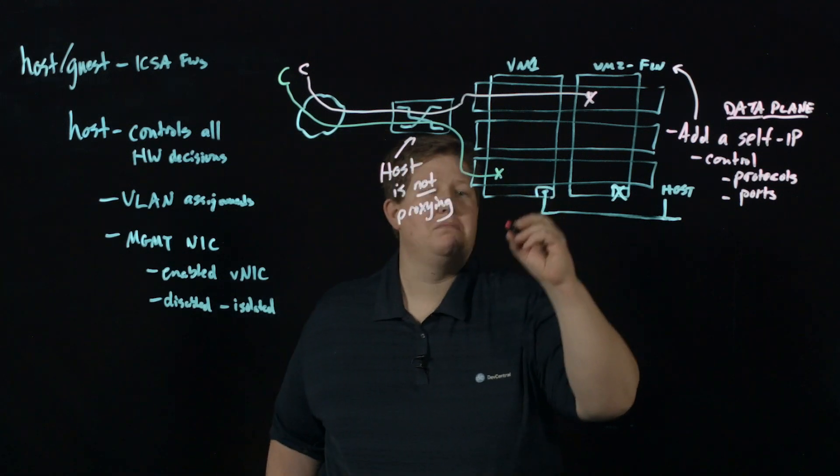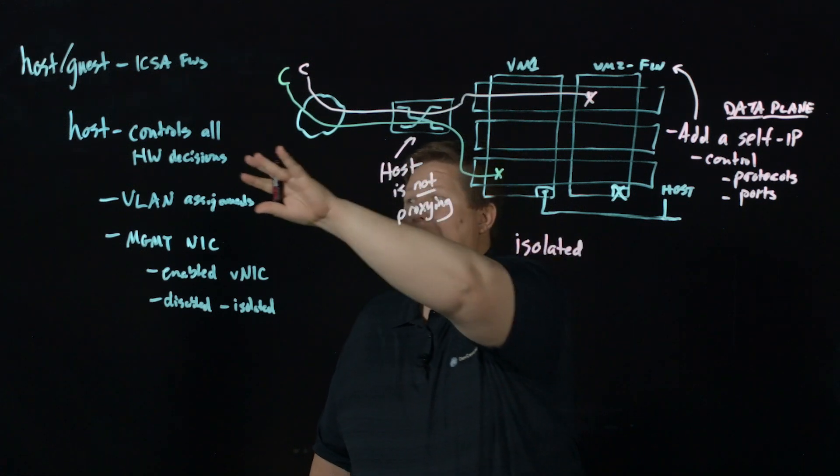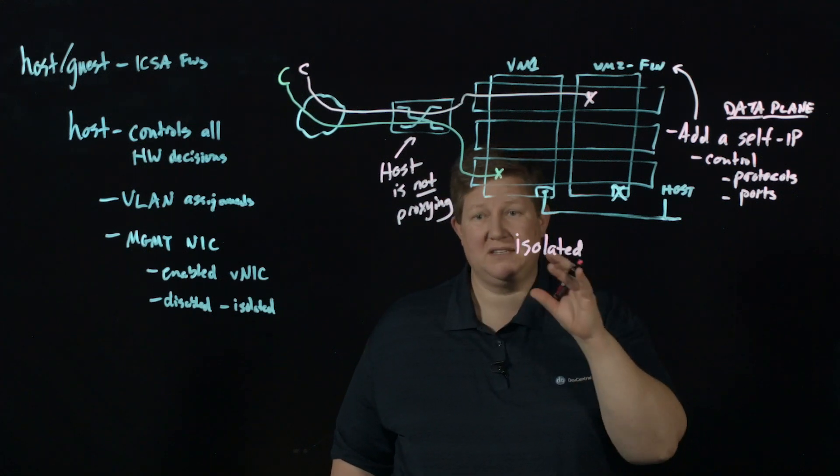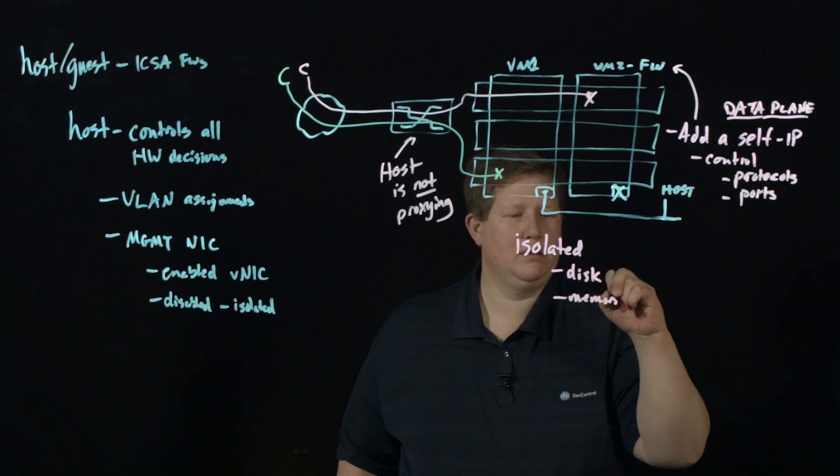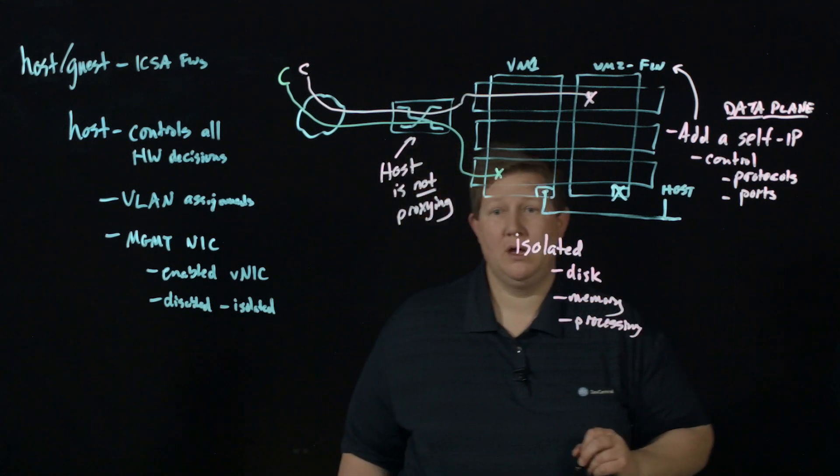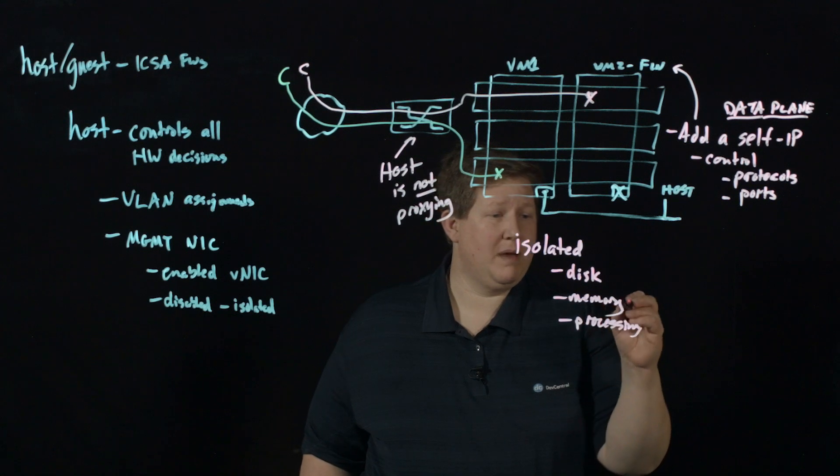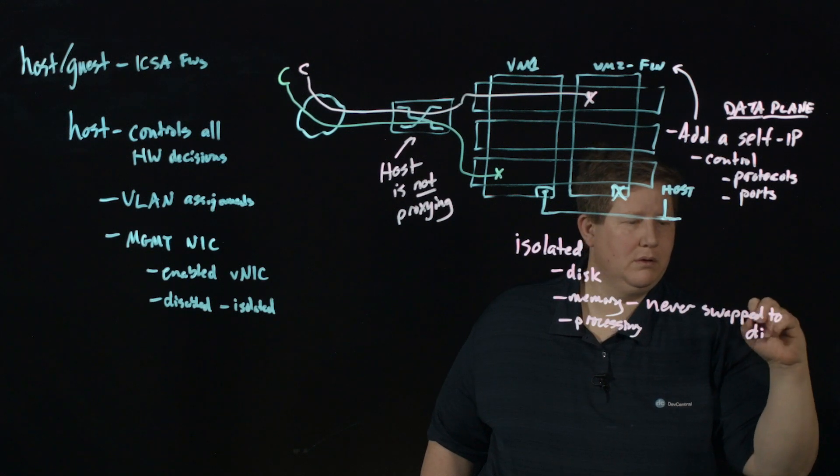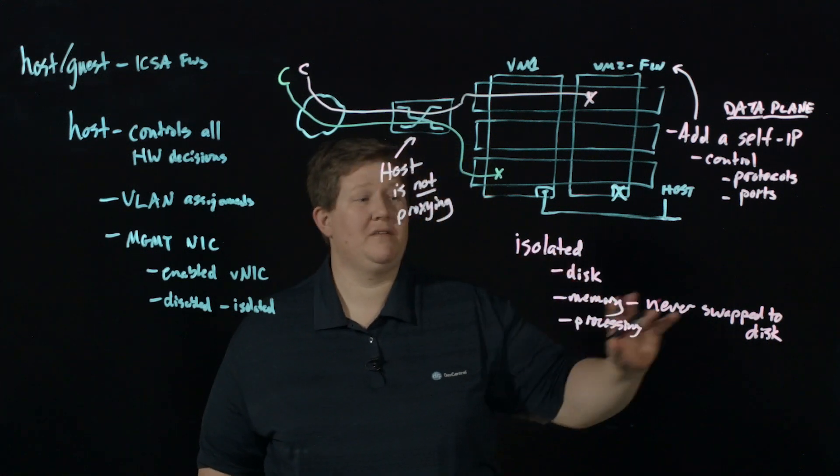And so let's talk about the guests themselves. These guests are completely isolated from each other. Again, assuming you're at the VLAN level of the host isolating them from a network perspective. But from a system perspective, they are isolated at the disk, memory, and processing levels. It's discrete memory for the guest and discrete disk. And with the memory, it's never swapped to disk.